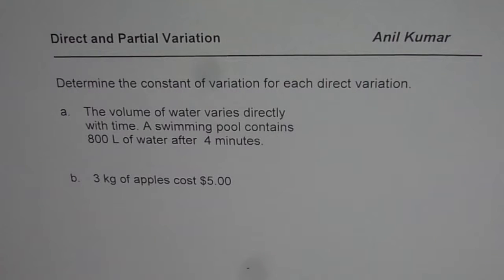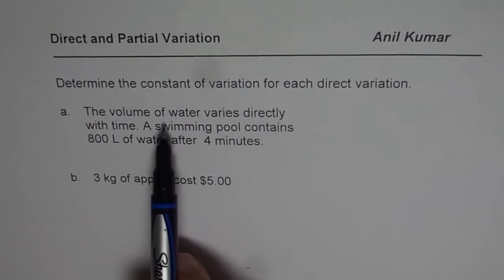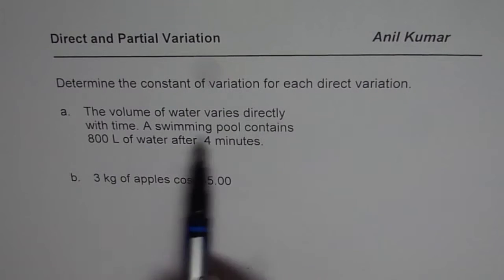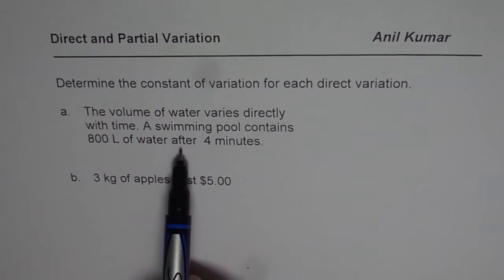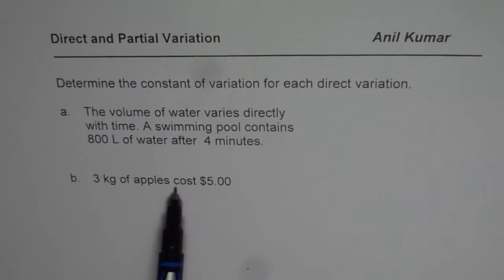I am Anil Kumar and we will explore a few examples on direct variation in this video. The question here is: find the constant of variation for each direct variation. Two situations are given to us. A: the volume of water varies directly with time — the swimming pool contains 800 liters of water after 4 minutes. The second one is: 3 kg of apples cost $5. We know both are direct variations.